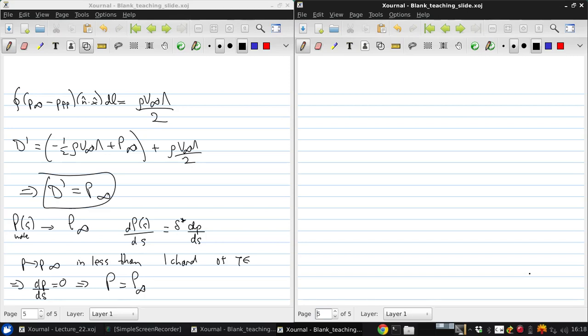Remember that the momentum defect at the trailing edge is the sum of upper and lower surface values at the trailing edge. Then the drag per unit span, which is the far field momentum defect,